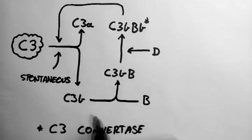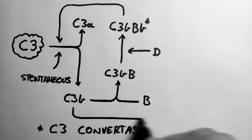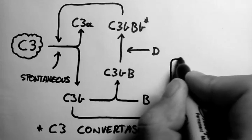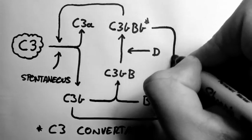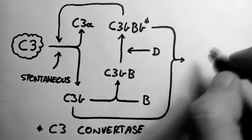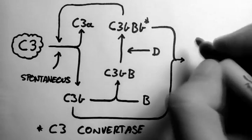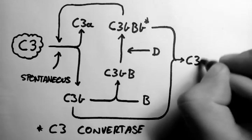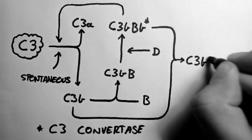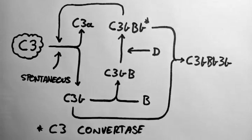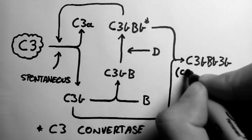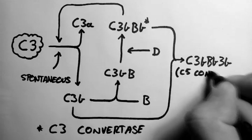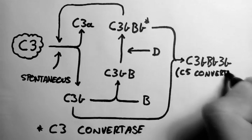But it can also join up with another C3B protein to produce a protein called C3BB3B. If you haven't figured it out yet, we're just adding the letters of all the proteins onto one another.